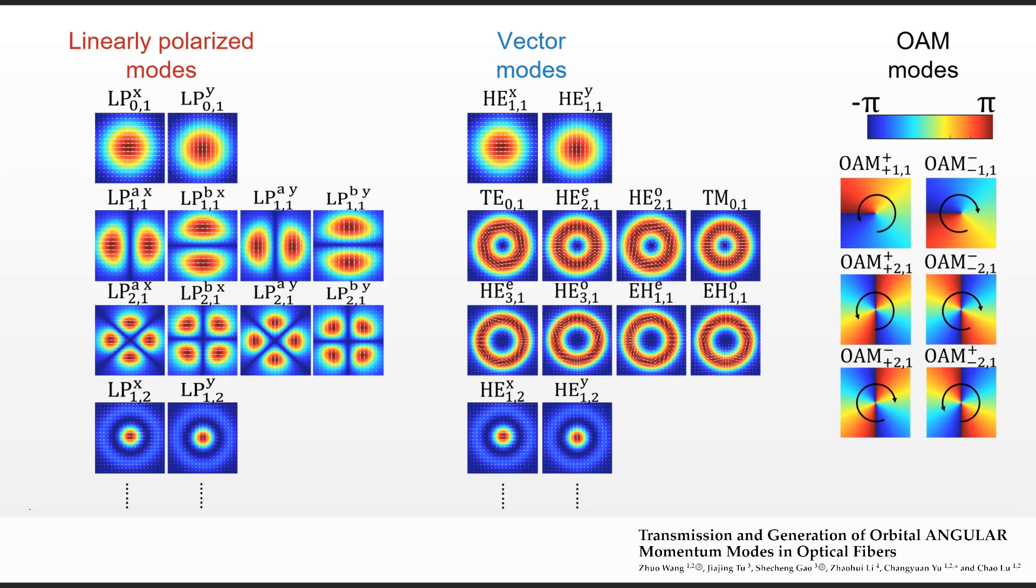The modes a fiber can carry strongly depend on the ratio between the light wavelength and the core diameter. A smaller core can carry only lower order modes. The extreme is a single-mode fiber which can only carry the two fundamental modes.